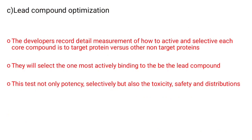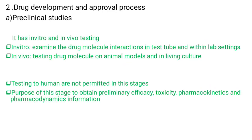Next is lead compound optimization. The developers record detailed measurements of how active and selective each core compound is to the target protein versus other non-target proteins. They select the one most actively binding as a lead compound or drug. This test covers not only potency and selectivity but also toxicity, safety, and distribution. By these methods, the most suitable drug is found.